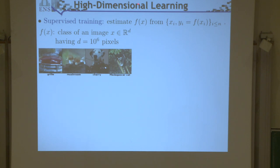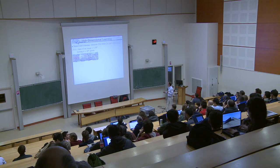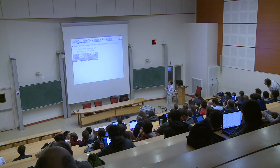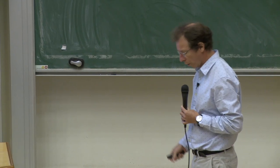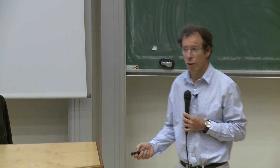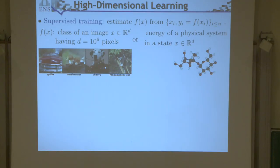The problem is to estimate a function f of x, which for example could be the class of an image, from data x where x is a very high-dimensional vector. That's the core of high-dimensional learning. In supervised learning, you have examples of images and labels, out of which you need to estimate f of x for any x. We'll look at image classification, but also regression problems in physics.